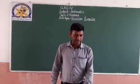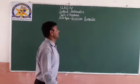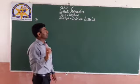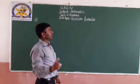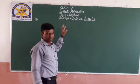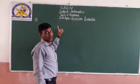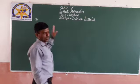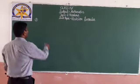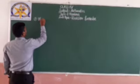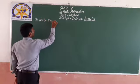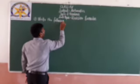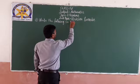Question number one: write the following in numbers. Now, revision exercise — write the revision exercise page number and then question number one. What is question number one? Write the following in numbers.